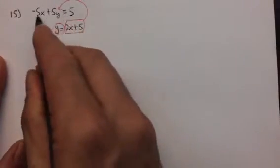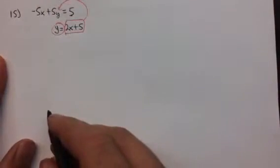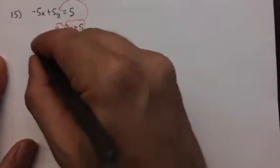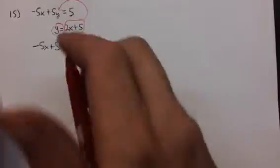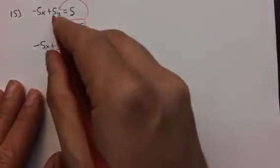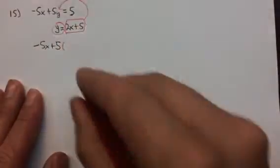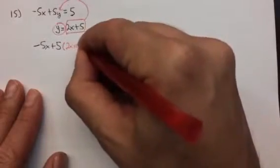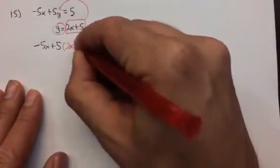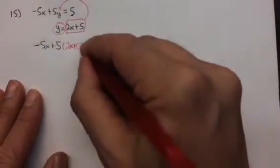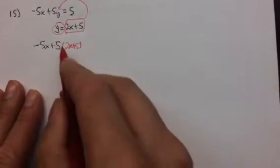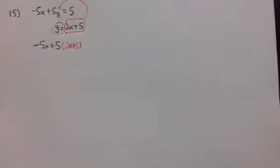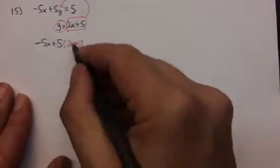The original equation, the first equation, used to say negative 5x plus 5y equals 5. Now it's going to say negative 5x plus 5. And then we're going to put in what y is equal to. Instead of 5 times y, it's going to be 5 times 2x plus 5, because that is what y is equal to. Notice that we put parentheses here. 5 used to be multiplying times y. Now it's multiplying times the whole thing that y is. And it's going to distribute.